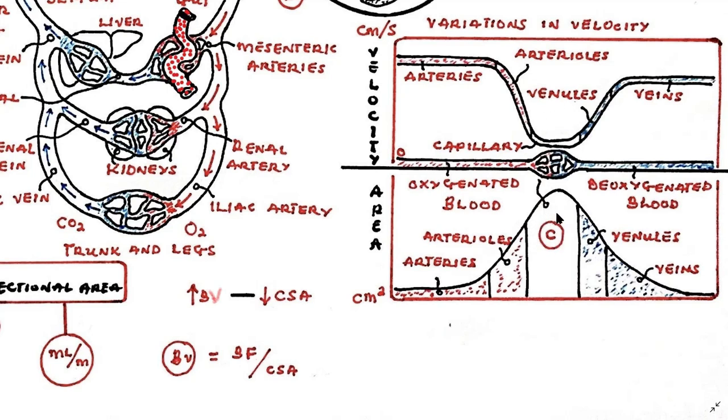the largest cross sectional area as well as the slowest velocity. We can also see that the arterial system has the highest velocity but the smallest cross sectional area, whereas the venous system has a relatively lower velocity but higher cross sectional area than the arterial system.